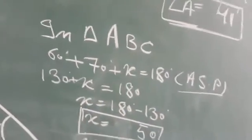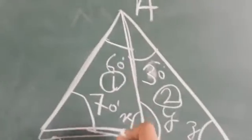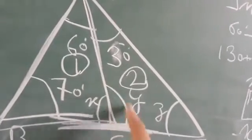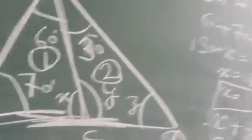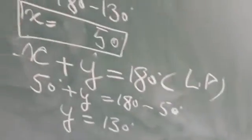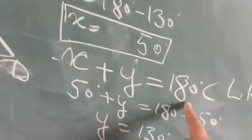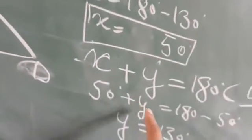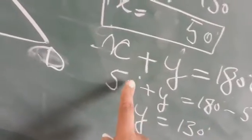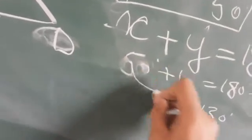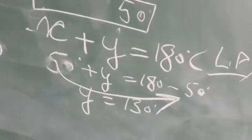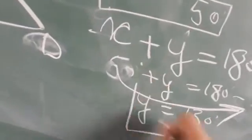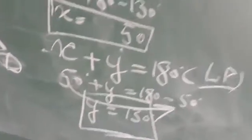अब X = 50 degree आ चुका है। यहाँ पर straight line है, straight line पर angle का sum 180 degree होता है due to linear pair। तो X + Y = 180 degree। 50 + Y = 180, Y = 180 - 50 = 130 degree।